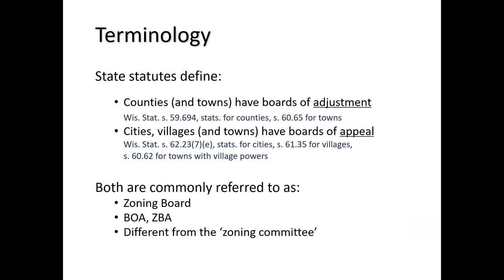Now we're going to jump into the zoning board of adjustment or appeals. According to Wisconsin state statutes, counties and towns without village powers have boards of adjustment. Cities, villages, and towns that have village powers have boards of appeal. They're different names, but they do exactly the same thing — whether it's a board of adjustment or a board of appeal. We also have some short names: the zoning board, or the BOA.